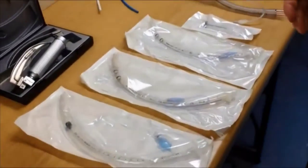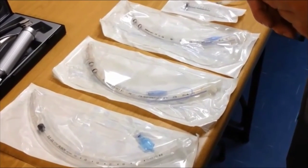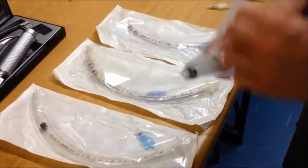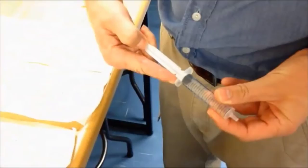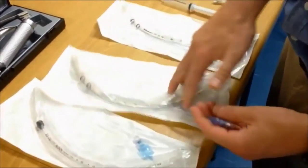The endotracheal tube should be checked for a functioning bulb without compromising the sterility of the ET tube. We suggest the following: open the syringe you are going to use and then open just a corner of the endotracheal tube you are going to use and retrieve the pilot cuff.